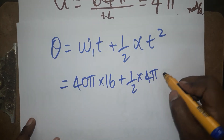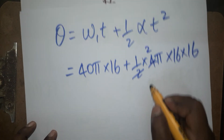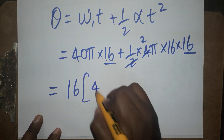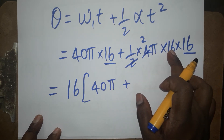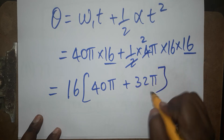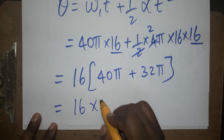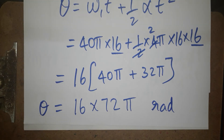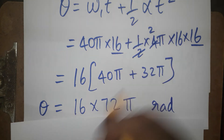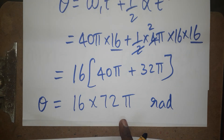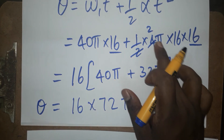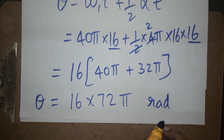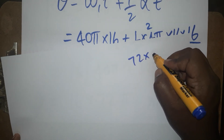Continuing the substitution: θ = 40π × 16 + ½ × 4π × 16². For the second term: ½ × 4π × 256 = 2 × 16π × 16 = 32π × 16. Taking 16 as a common factor outside: θ = 16 × (40π + 32π) = 16 × 72π. So θ = 16 × 72π.